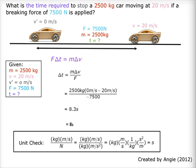What is the time required to stop a 2,500 kg car moving at 20 m per second if a braking force of 7,500 N is applied? Each clue is highlighted in different colors. The mass of the car is 2,500 kg, initial velocity is 20 m per second, final velocity is 0 m per second, and the force applied is 7,500 N. What is the time required?